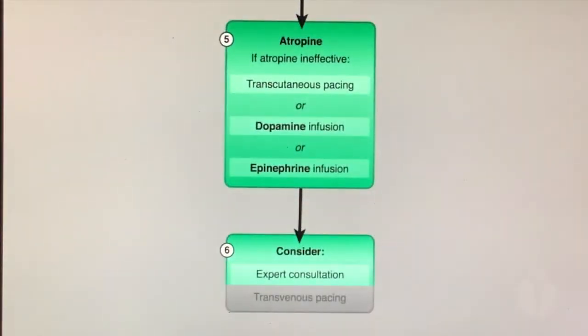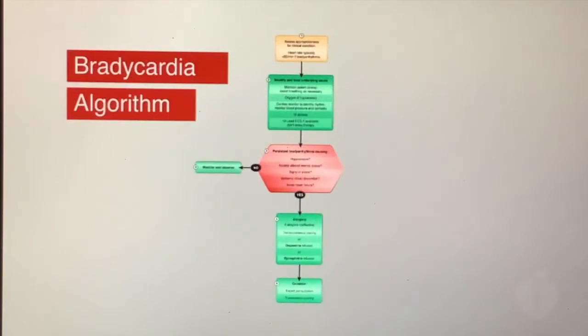If the patient doesn't respond to atropine, TCP, dopamine, or epinephrine, seek expert consultation, prepare for transvenous pacing, and search for and treat contributing causes. Bear in mind that the treatment sequence in the algorithm is determined by the severity of the patient's condition. You may need to implement multiple interventions simultaneously. If the patient goes into cardiac arrest, go to the cardiac arrest algorithm.